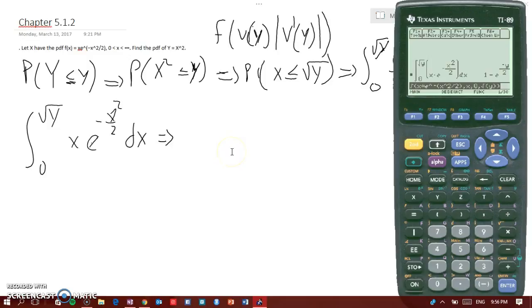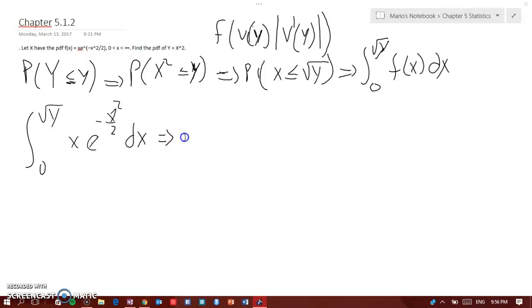And we get 1 minus e to the negative Y over 2. So here we get 1 minus e to the negative Y over 2.